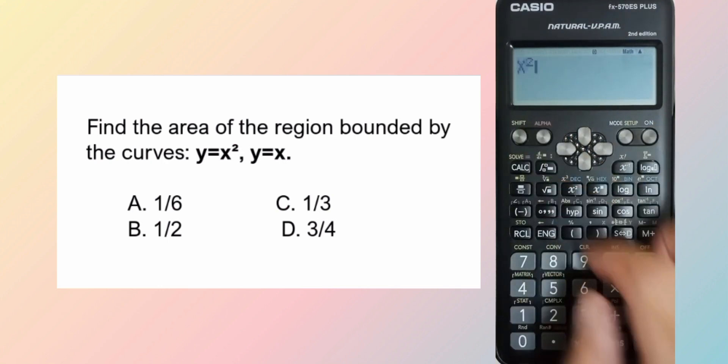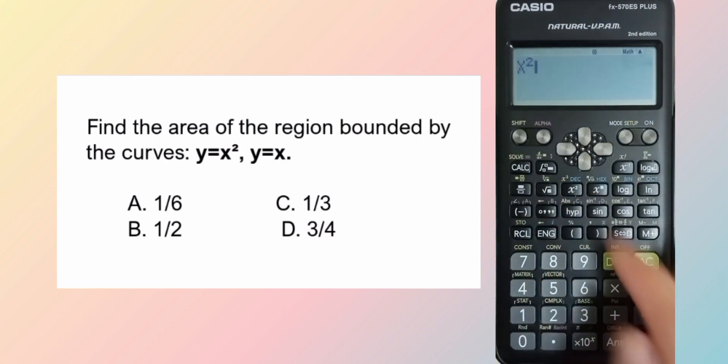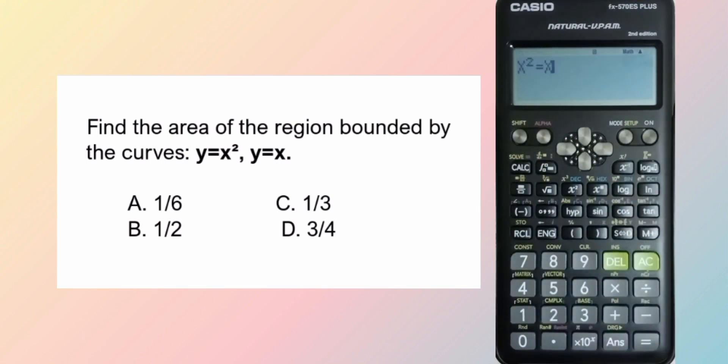x squared equals x. So equating the two equations, x squared is equal to x. Solving for x.